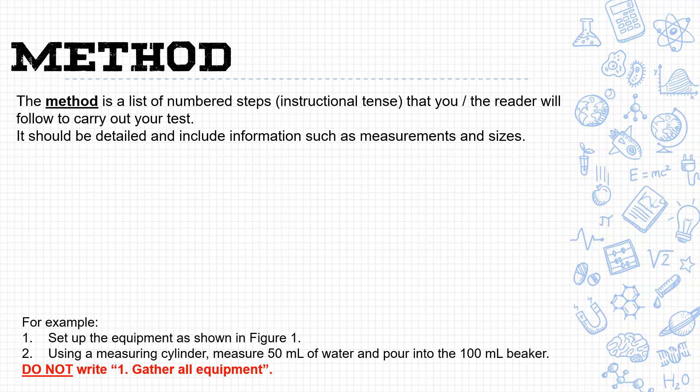The method needs to be detailed enough that if I pick it up and want to see if I get the same result to confirm your experiment, I need to be able to do exactly what you did. So it needs to be descriptive. What I mean by instructional tense is things like as if I was telling you to do something.